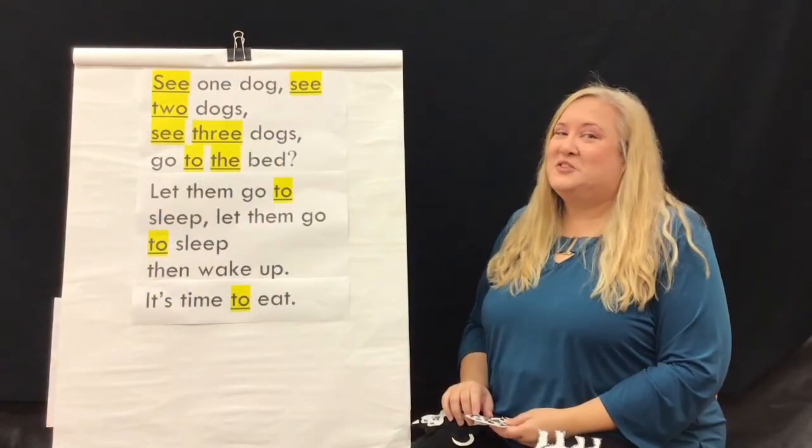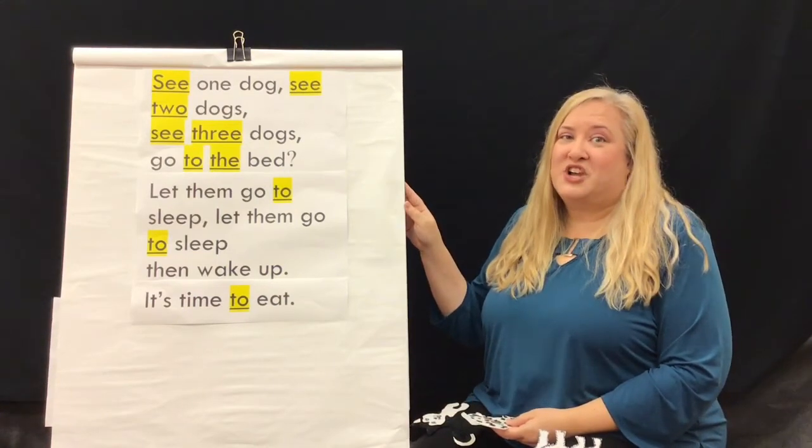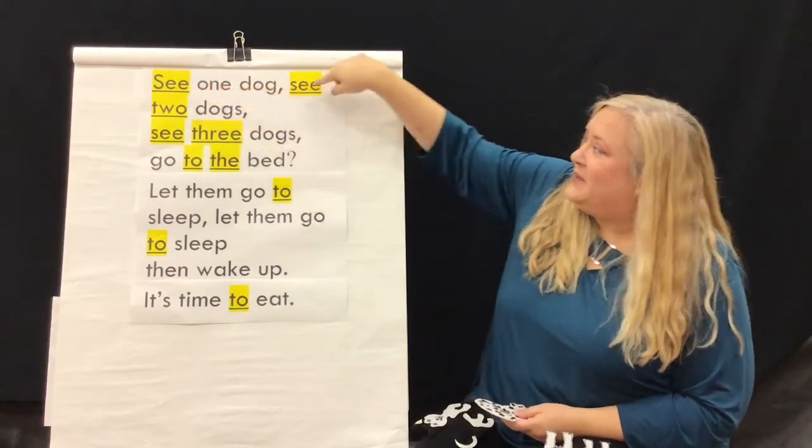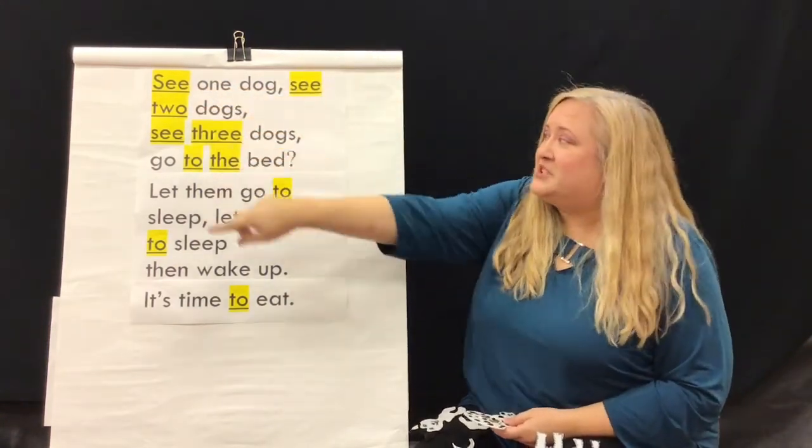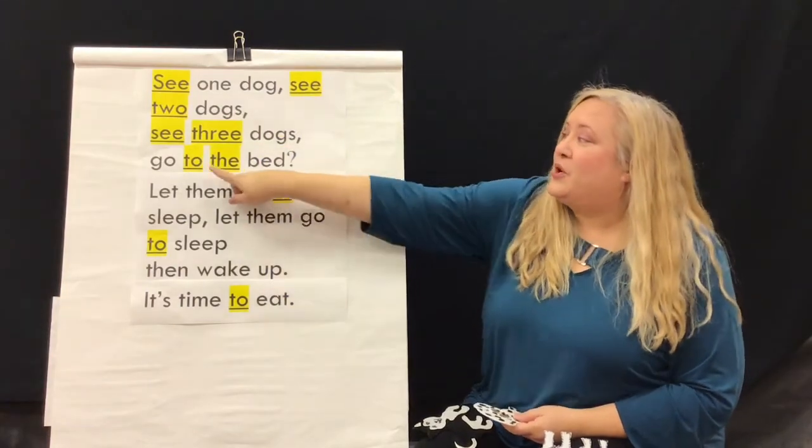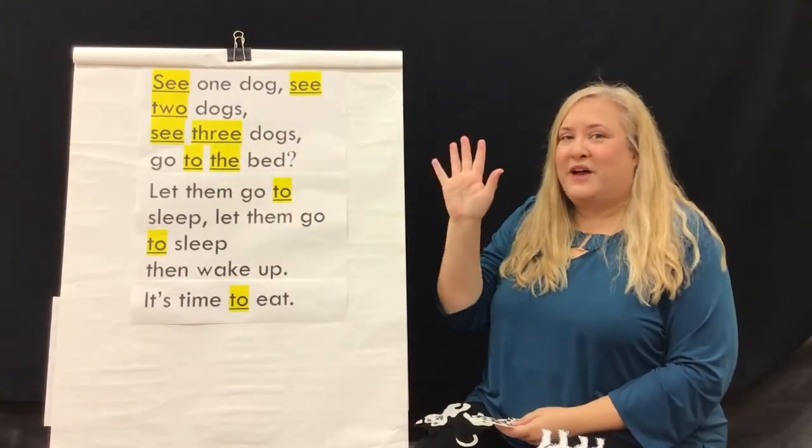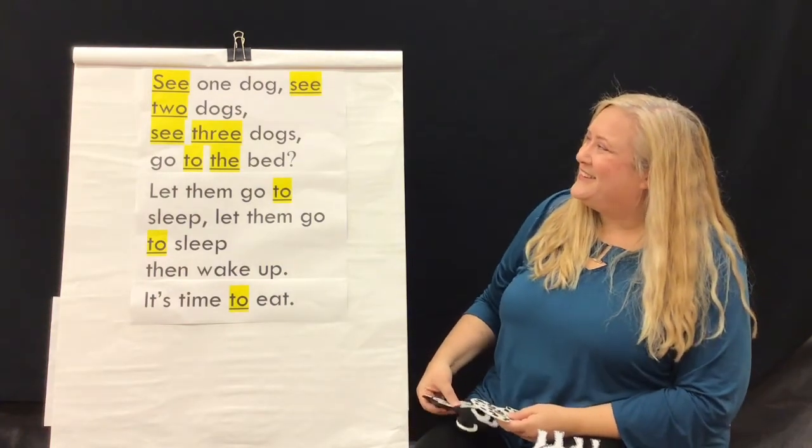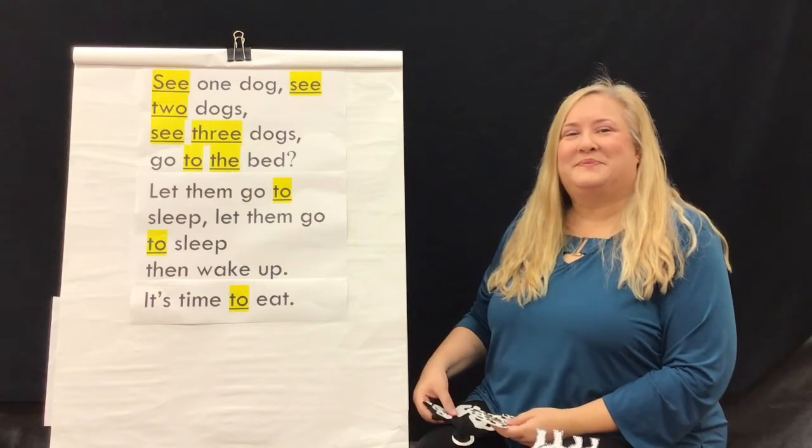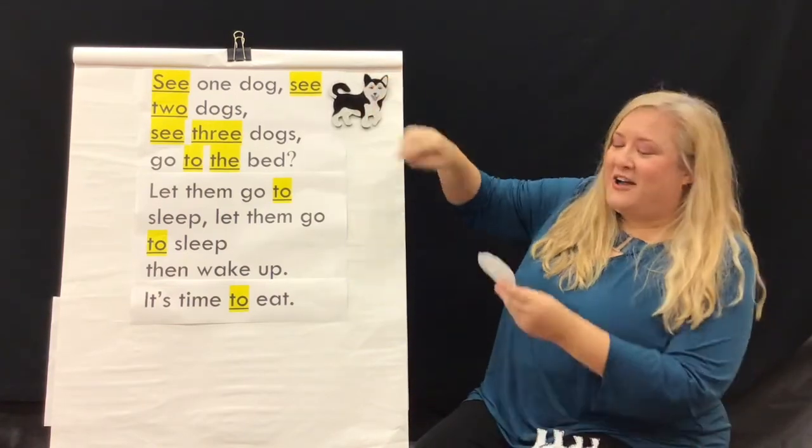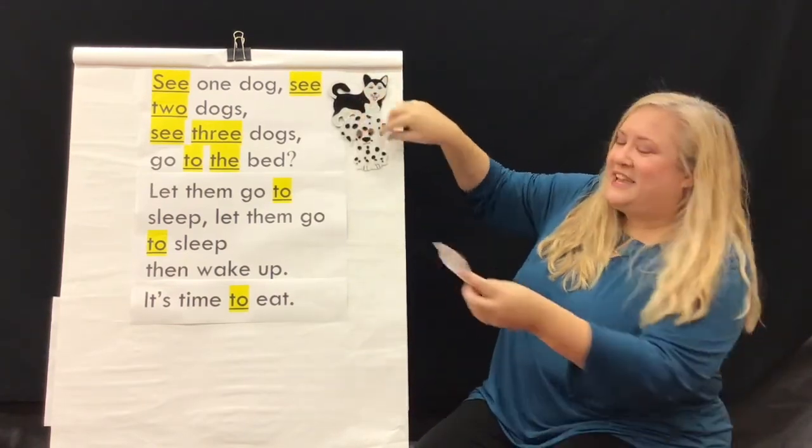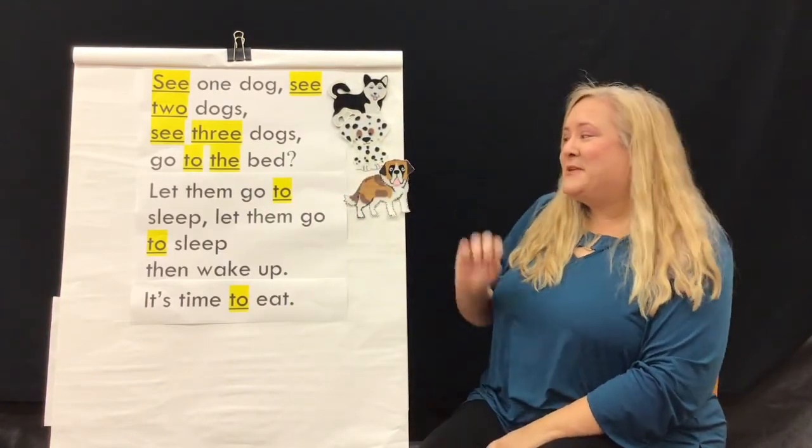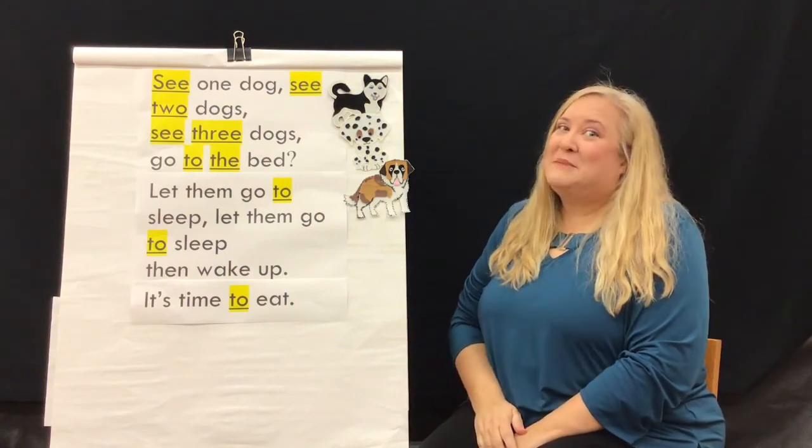Let's sing using our sight words. This variation of Frere Jacques uses all five of this week's sight words. We have the word see, the word two for the number two, the word three, the word two, and the word the. All five of our words. Let's sing. See one dog. See two dogs. See three dogs. Go to the bed. Let them go to sleep. Let them go to sleep. Then wake up. It's time to eat.